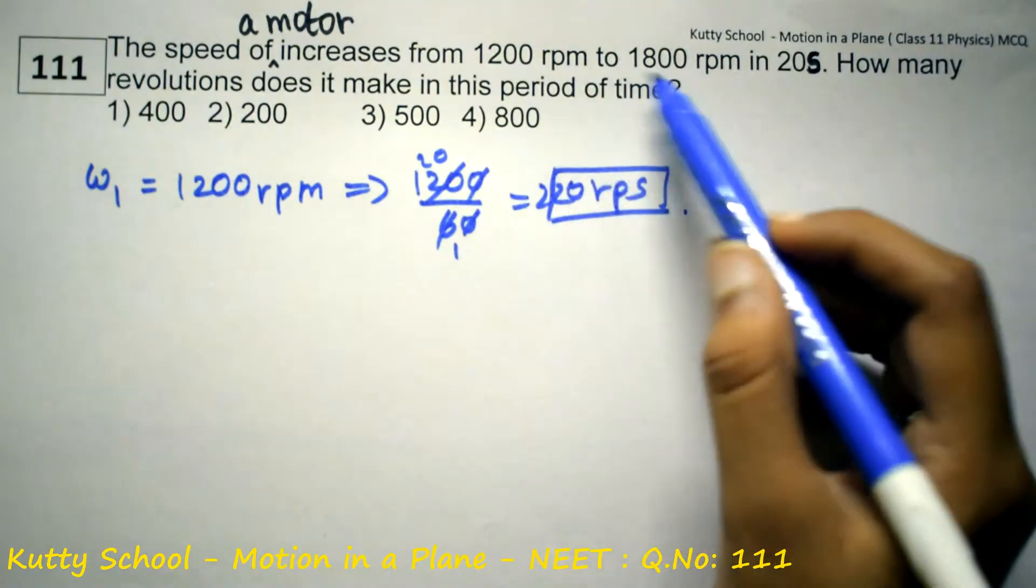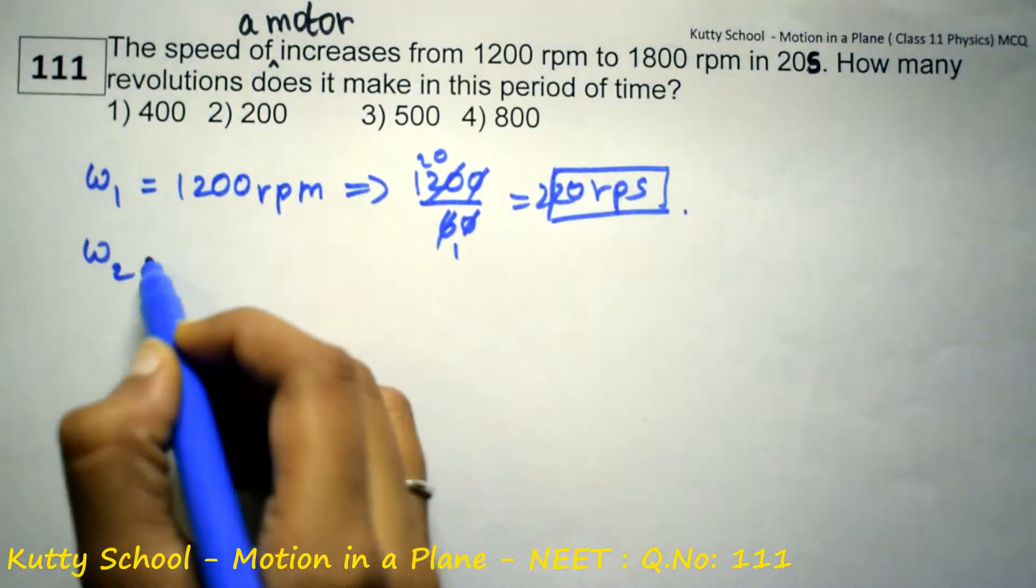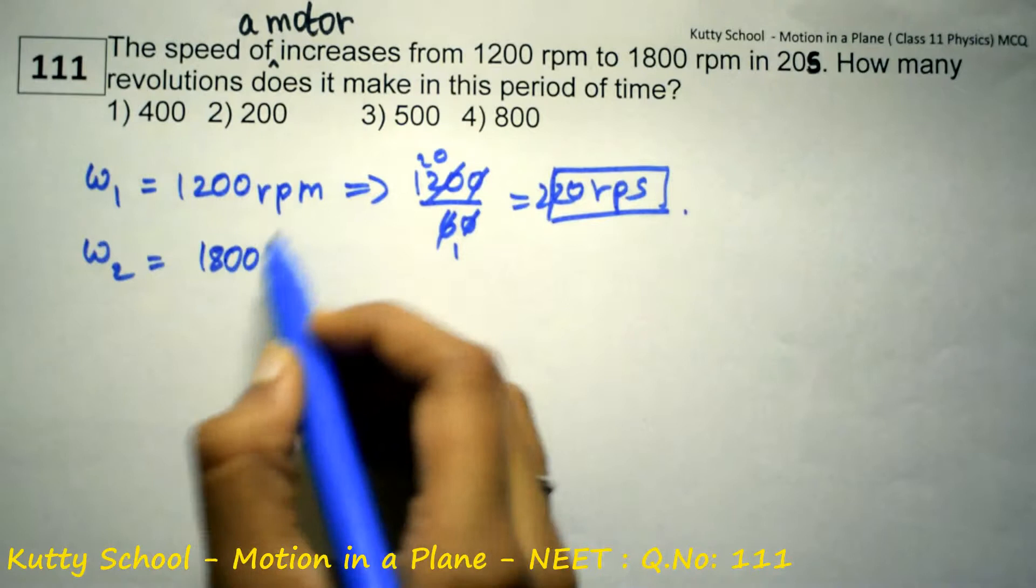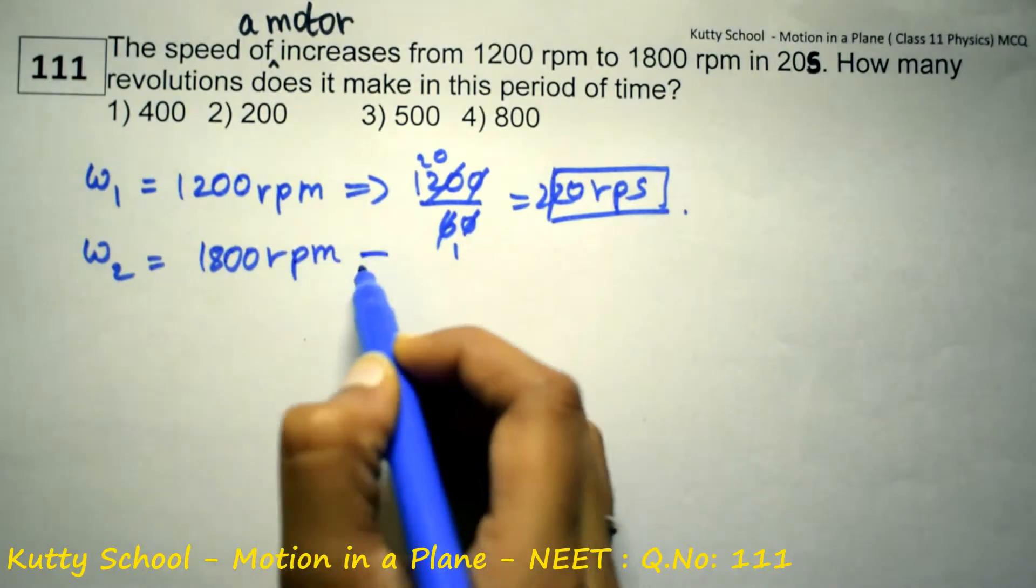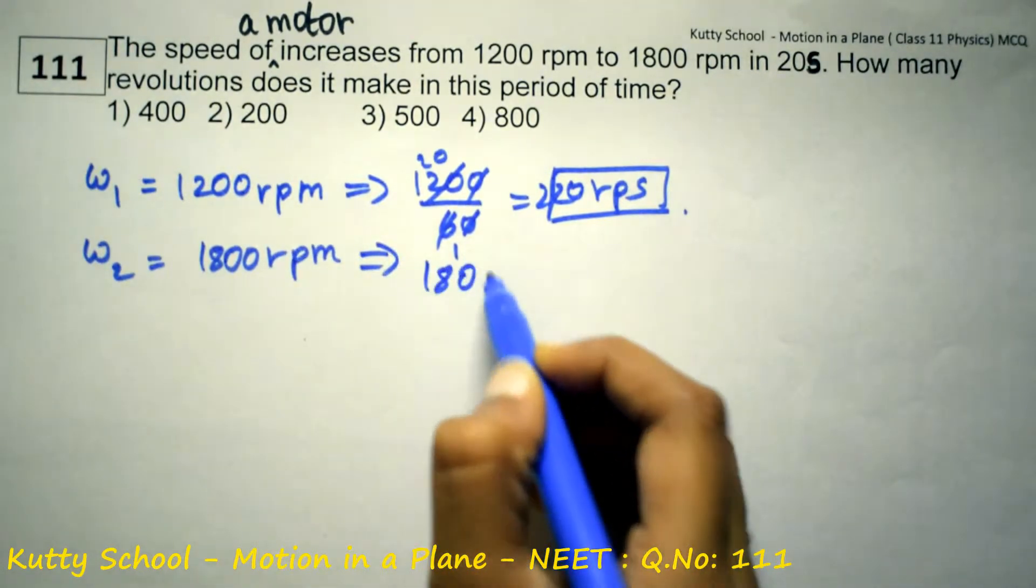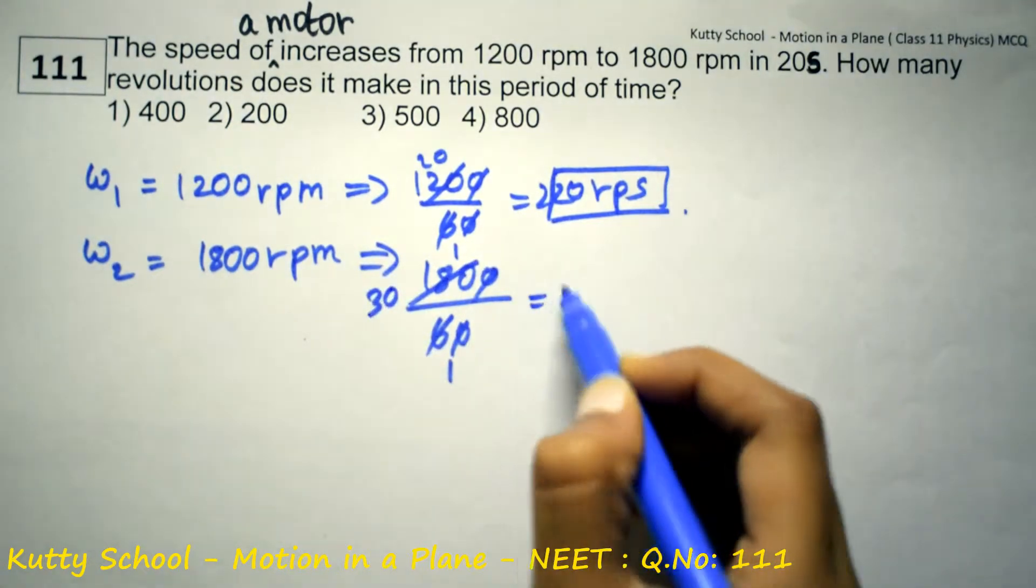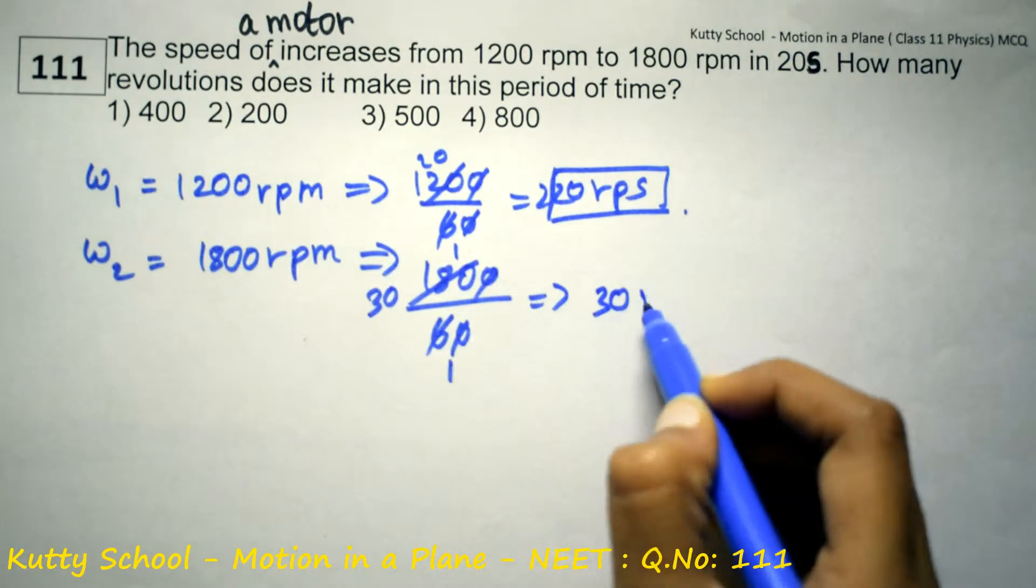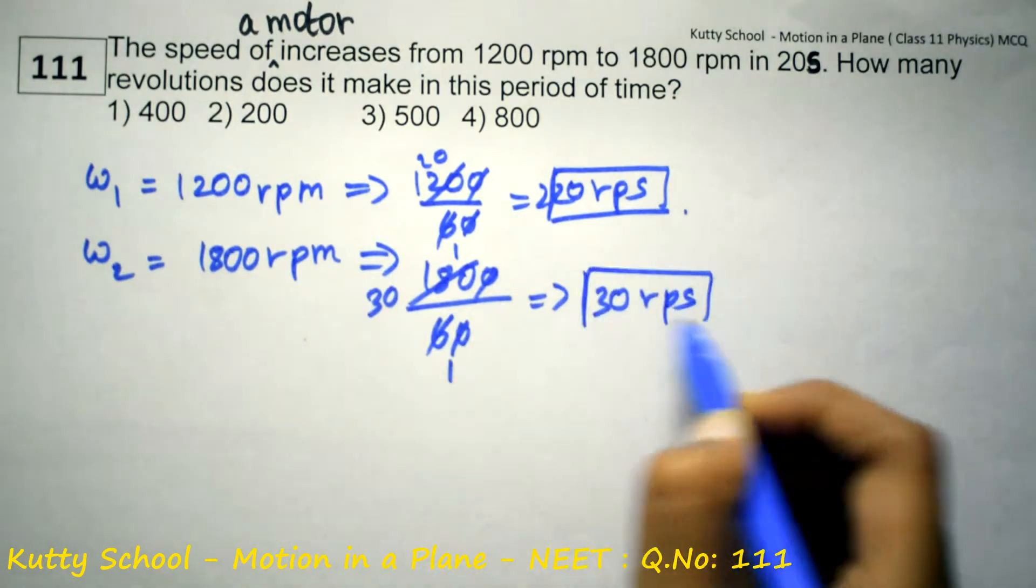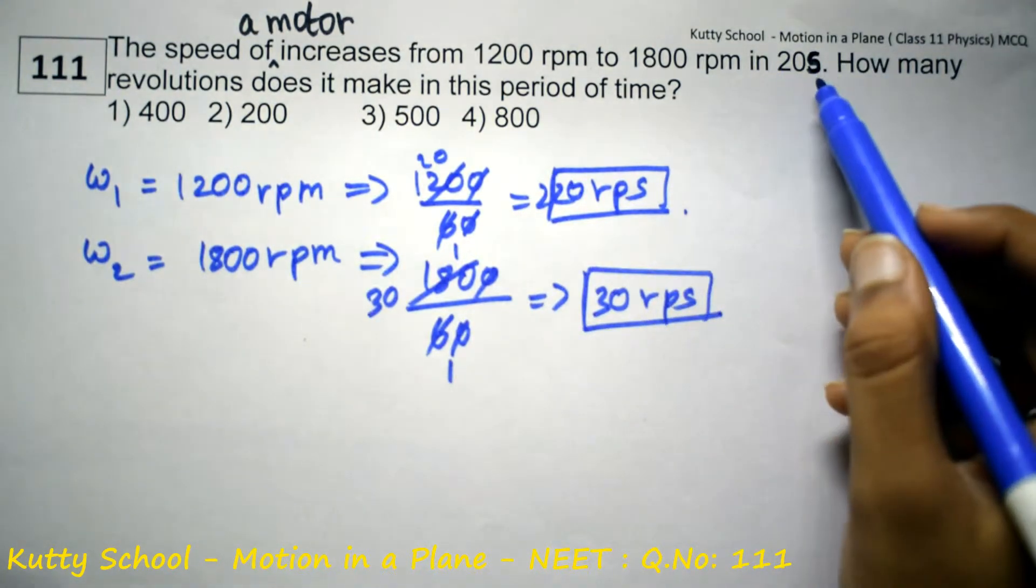Omega 2, that increase, is equal to 1800 rotations per minute. That is, to convert, 1800 by 60. 6 ones are 6, 3s are... Therefore, it becomes 30 rotations per second in 20 seconds.